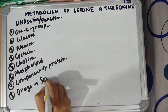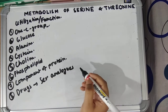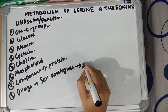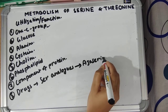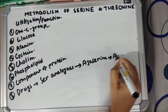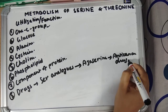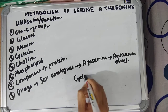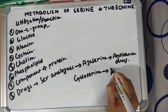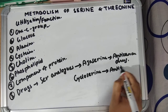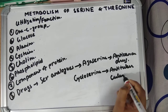Number eight: drugs. There are some synthetic serine analogues which act as drugs. For example, azaserine is an anti-cancer drug, and cycloserine is an anti-tubercular drug.